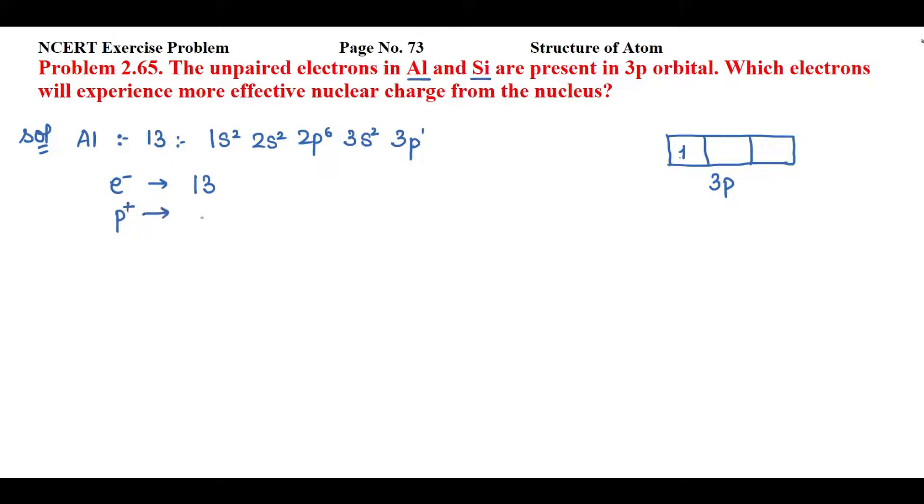Now next one, silicon. The atomic number of silicon is 14. 1s² 2s² 2p⁶ 3s² and 3p². Now electrons are 14 and protons are also 14. Now these unpaired electrons are present in 3p orbital.